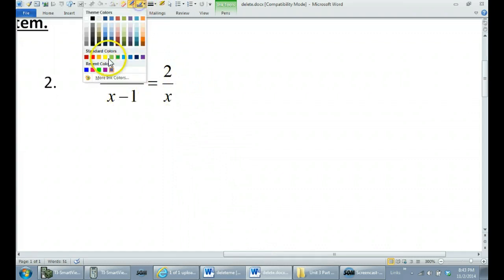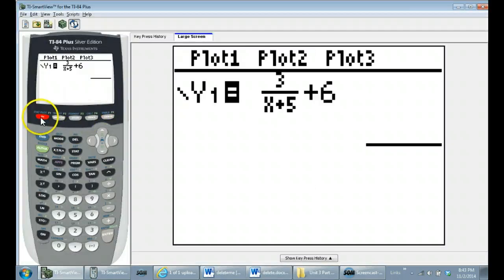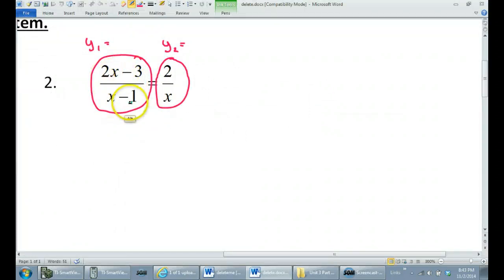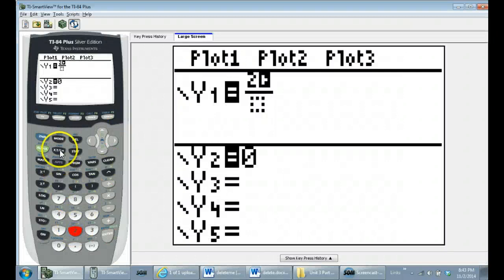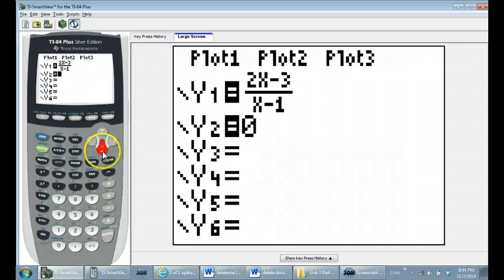So let's do number 2 as another example. Again, I could put the left side as one equation, so this could be my y1, and I could put the right side as my other equation, so this could be y2. I'm just going to do it that way for now and see how that works out. So hit my y equals, I'm going to clear this stuff out of there. So I've got 2x minus 3 over x minus 1. So again, fraction mode, I hit alpha, y equals, enter. So here's 2x minus 3 over x minus 1. That's my first equation.